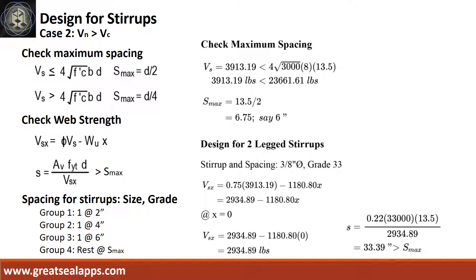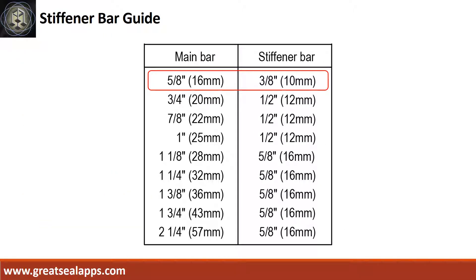The stirrup spacing are as follows: 1 at 2 inches, 1 at 4 inches, rest at 6 inches. For 5/8 inch diameter main bars, use 3/8 inch diameter stiffener bars.